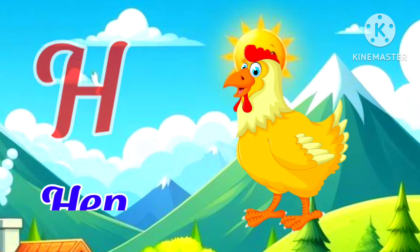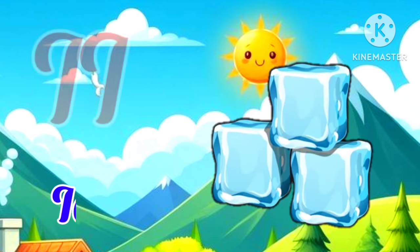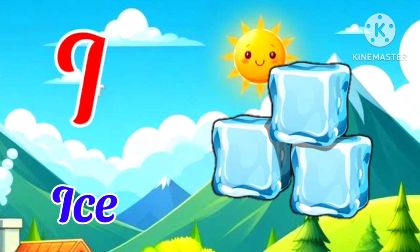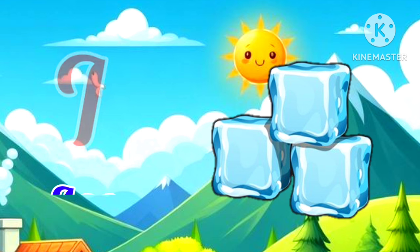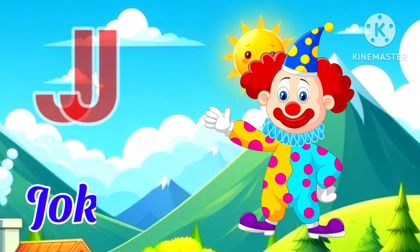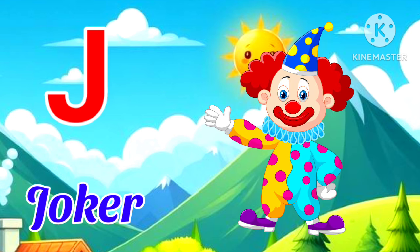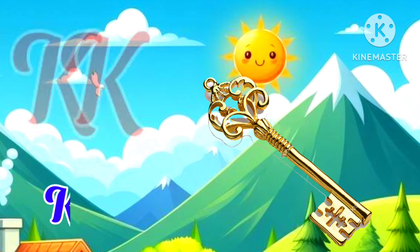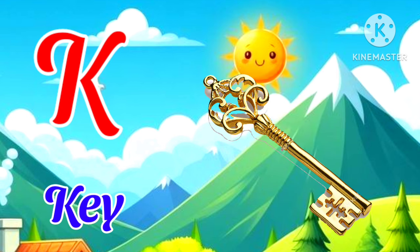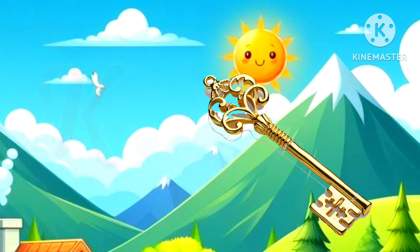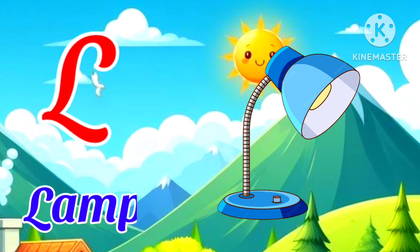H for Hand — Hand means Murgi. I for Ice — Ice means Burf. J for Joker — Joker means Joker. K for Key — Key means Chabi.